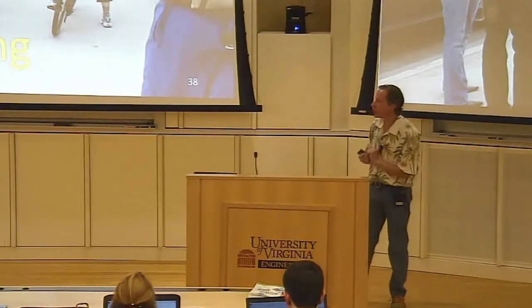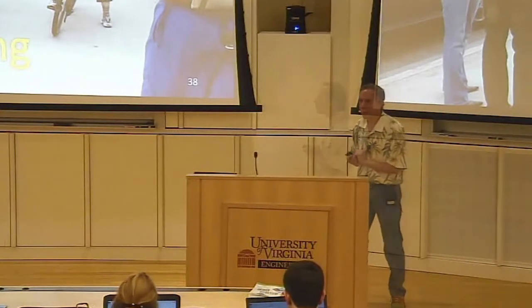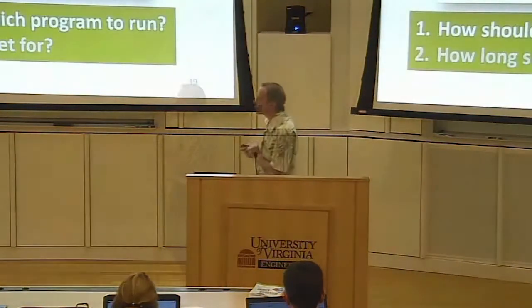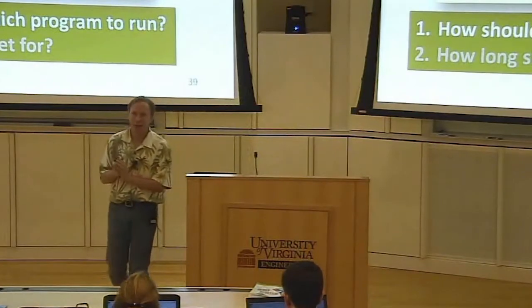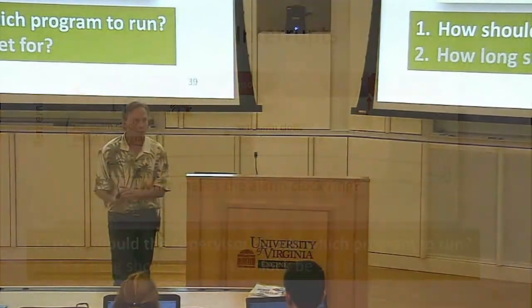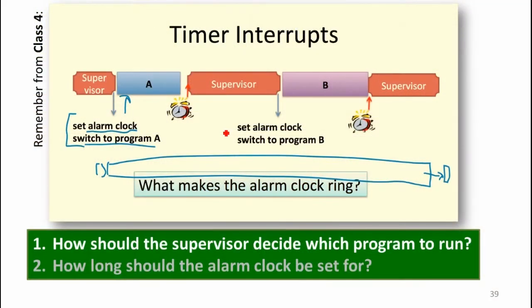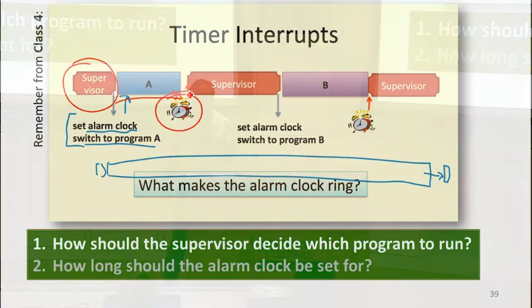We're trying to share the time of the CPU among the processes. We talked back in class 4 about the kernel timer interrupt. Our model for sharing the CPU is we've got some supervisor that sets an alarm clock, it allows some process to run, and then at some point the alarm clock goes off, we get an interrupt that goes back to the supervisor, and the supervisor decides what to do next.